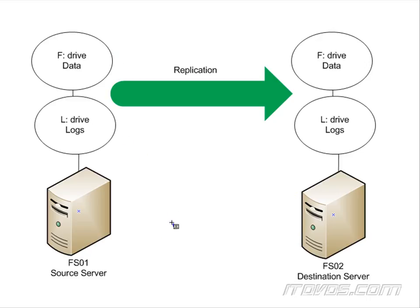Let's take a look at an example of server-to-server replication. In this case, we've got a server FS01 — it's a file server. This is going to be our source server. It's got an F drive where everybody has their files, so files are constantly being written to and changed. That's going to be replicated over to another server, FS02, on another drive. They're not shared disks — they can be completely separate, internal to FS01 and FS02 respectively, and the replication just happens over the network.